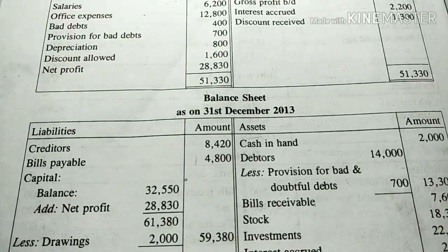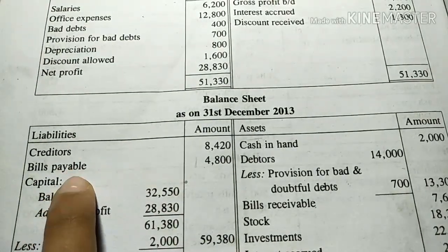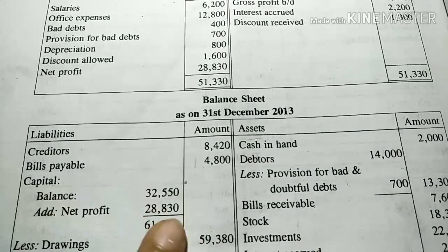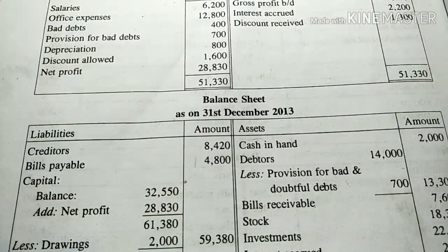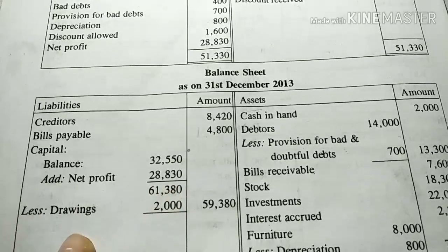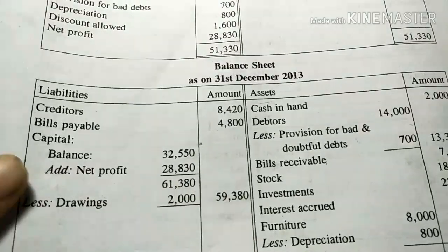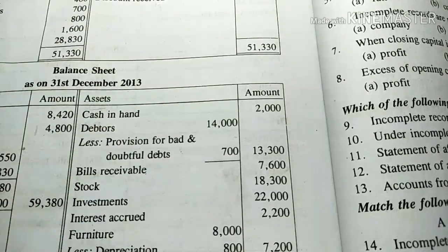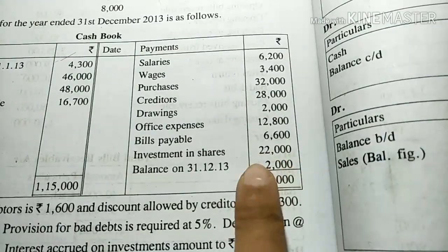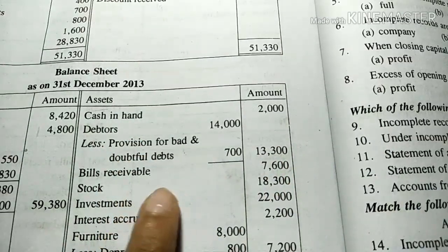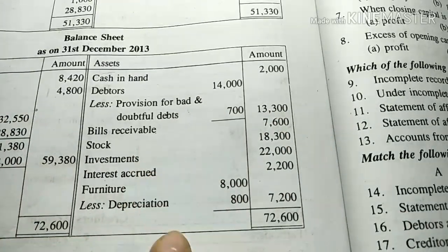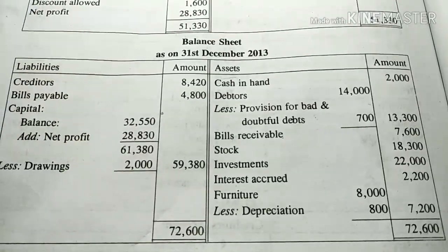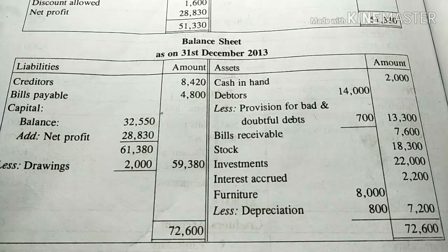How to prepare a balance sheet? If you have creditors or bills payable, because it is our closing balance sheet, we will make a capital and the amount we have to make. You can add net profit or drawings. You can add assets — cash in hand, closing balance in cash book, debtors, bills receivable, stock, and depreciation. You can add a balance sheet with accounts from incomplete records.